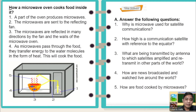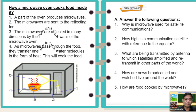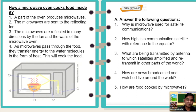How does a microwave oven cook food inside it? Number one: a part of the oven produces microwaves. Number two: the microwaves are sent to the reflecting fan. Number three: the microwaves are reflected in many directions by the fan and the walls of the microwave oven. Number four: as microwaves pass through the food, they transfer energy to the water molecules in the form of heat. This will cook the food. This figure shows the step-by-step process of how a microwave oven cooks food.